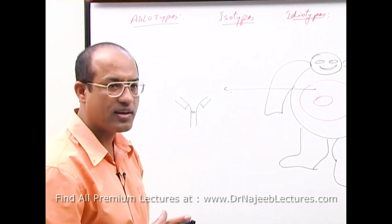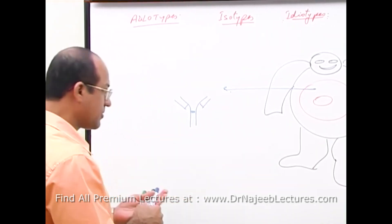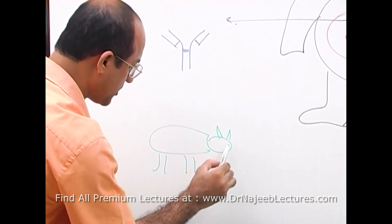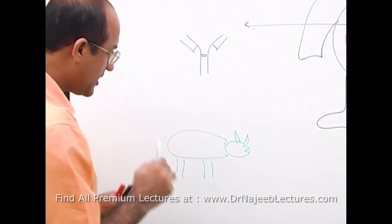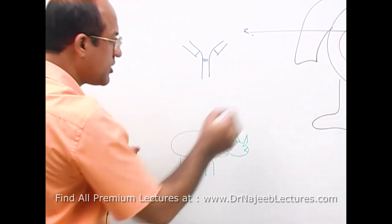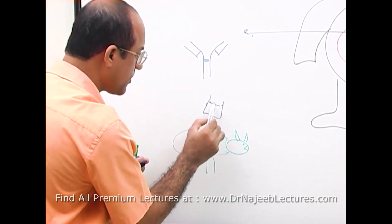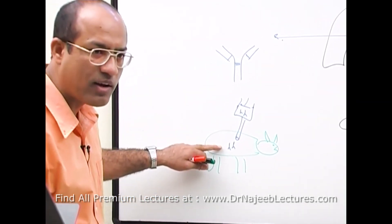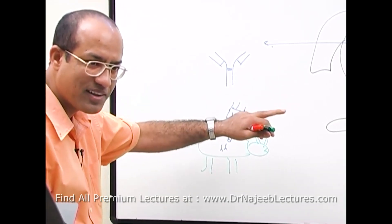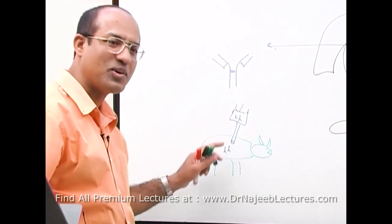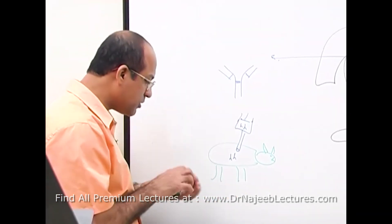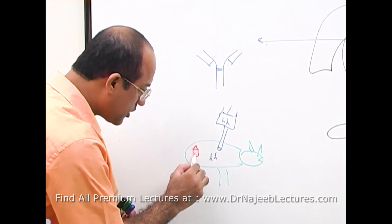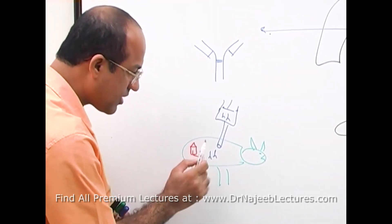For example, if your antibodies are injected into a donkey — suppose this is a donkey — and human antibodies from this person are injected into the donkey, do you think for the donkey these antibodies are self proteins or foreign proteins? Human antibodies for the donkey are foreign proteins.